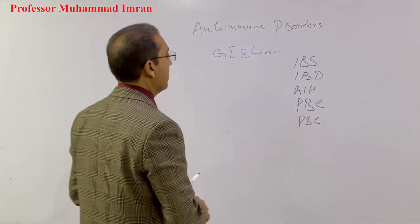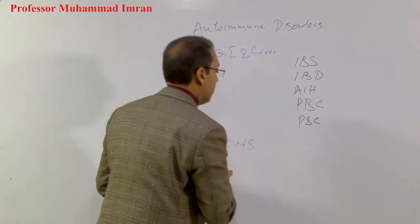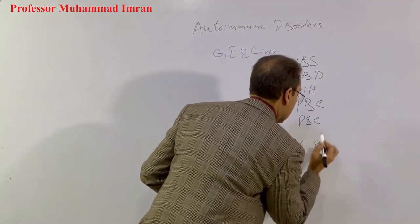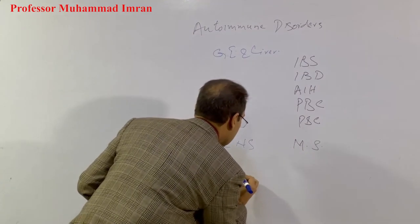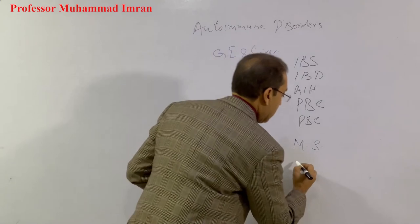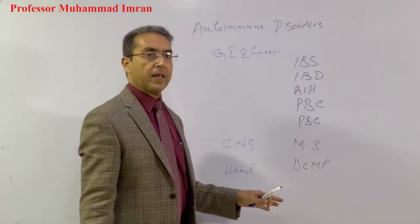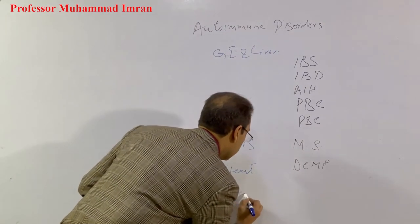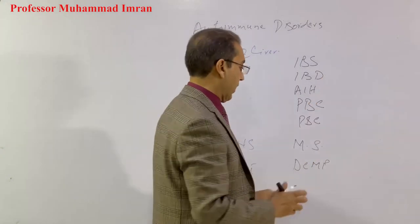In the nervous system, the patient may have multiple sclerosis. In the heart, the patient may have dilated cardiomyopathy of the idiopathic variety. In the skin, one associated condition is melanoma, and the patient can also have psoriasis.